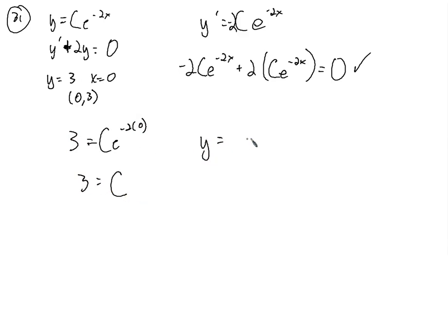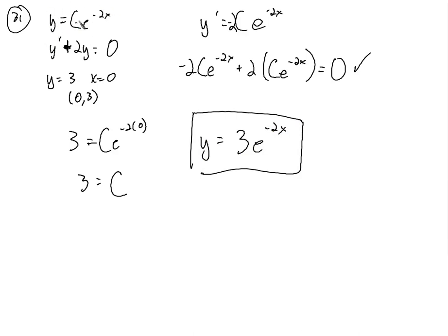So what we've shown is that any function of the form ce to the negative 2x is a general solution to this differential equation. Using the initial condition x equals 0, y equals 3, we plugged in and found c equals 3 — that gives the particular solution y equals 3e to the negative 2x. The general solution contains all possible solutions; the particular solution is the specific one satisfying the initial condition.